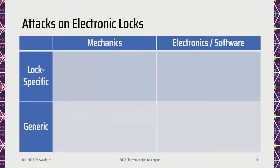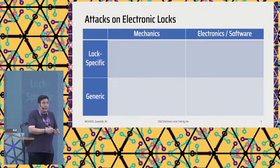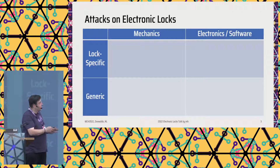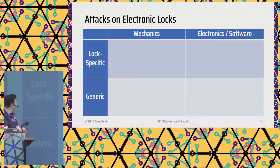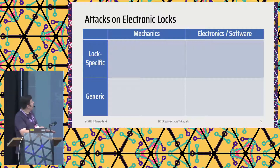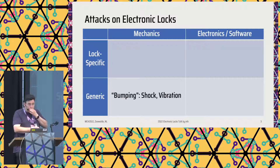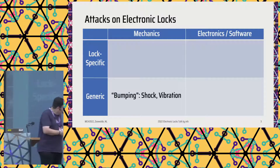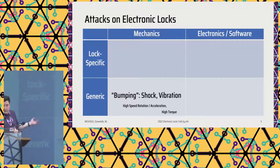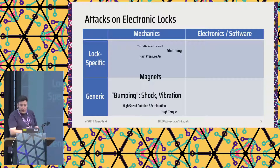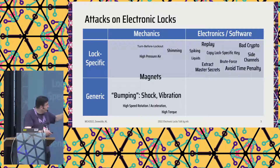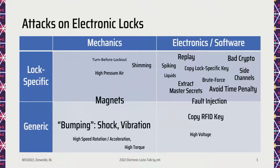To make it a little bit easier to follow this talk, I made four segments. Electronic locks are electromechanical systems, so you can attack the mechanics part or the electronics and software part. To sort it a little bit, there are generic attacks that work on many locks, and then there are also very lock-specific attacks. An example of a generic mechanical attack is bumping. Electronics and software have a lot of attack surface, but it is typically very lock-specific. Some things are generic, like if RFID keys can be copied — and you know that.